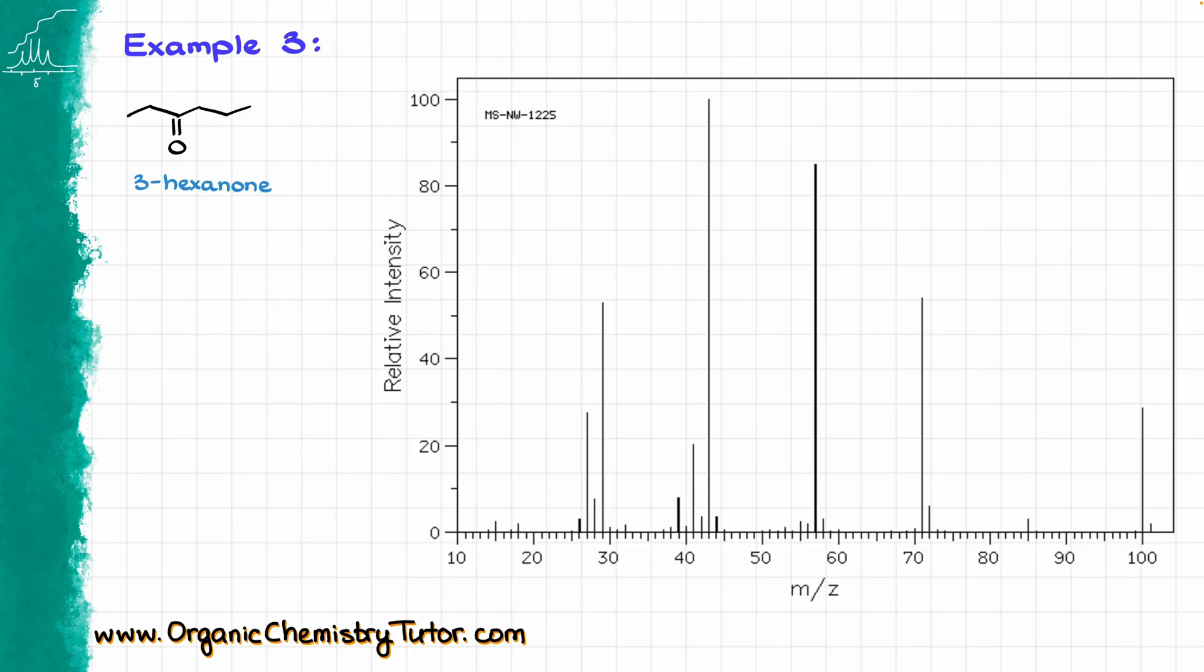We have 3-hexanone over here. The molecular formula is C6H12O, and the molecular weight is even 100. And looking at my mass spec on the right side, I can see that I do have the peak at 100, so we do detect the molecular ion peak. Now, in this case, we have several different potential places where the molecule can break up during the mass spectrometry. First one is going to be over here, giving me a resonance-stabilized carbocation at my carbonyl with a weight of 71, and we do have that signal as well.